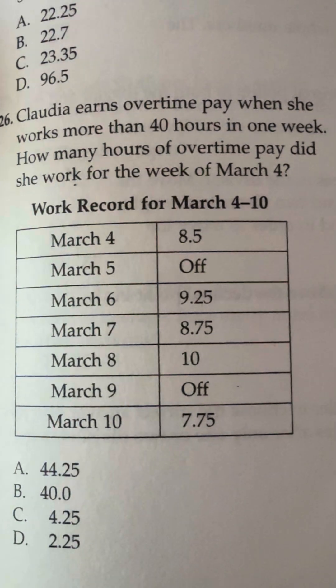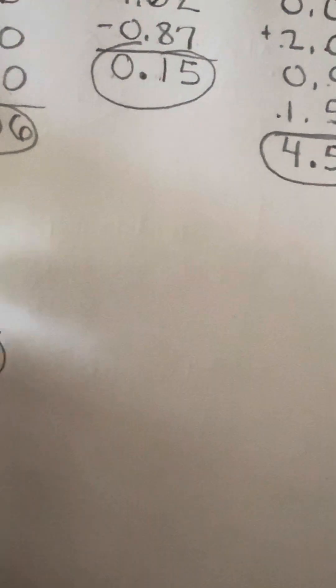So again, what we're going to do is take all those amounts. We're going to add them together. Anything that says off obviously was zero, so I'm not going to even put those in there. So I'm just starting off with 8.5. We're going to add that to, the next one was off. So then we had 9.25.